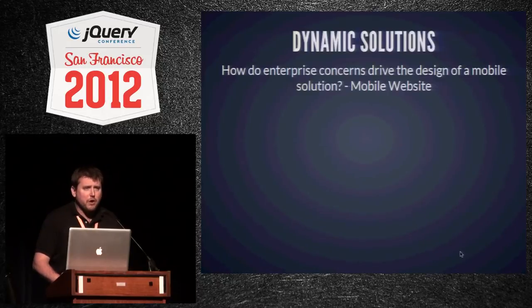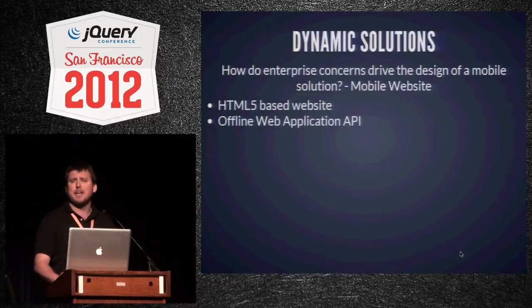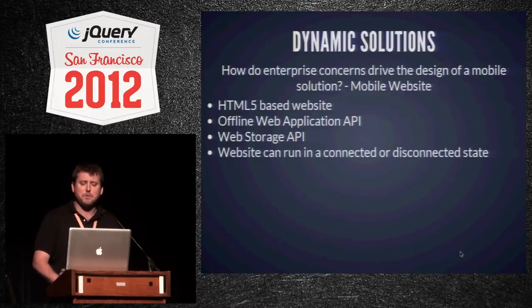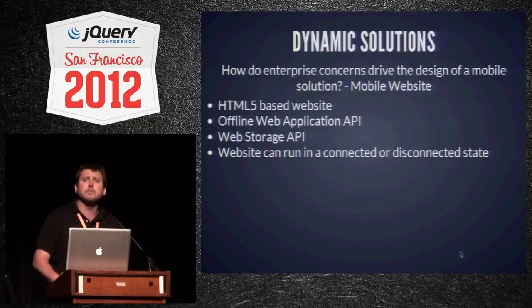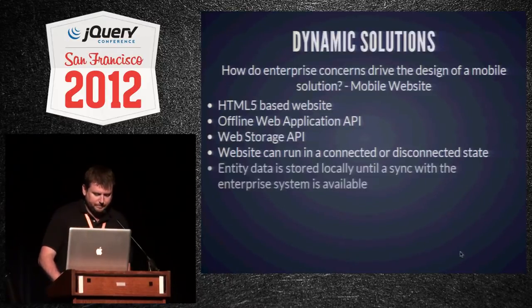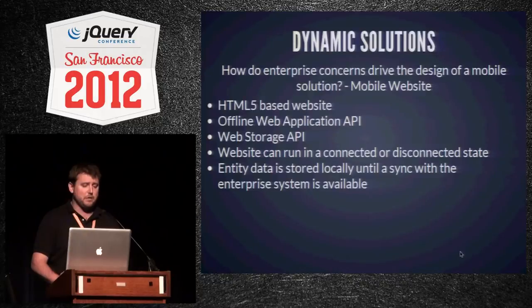The mobile website is an HTML5-based site. We make use of the offline web application API and the web storage API, and using both of those we can create a website that runs in a connected or disconnected state. This is very important when inspectors go into buildings where they won't have a connection — inspections still need to be completed. Entity data collected will be stored locally and then synced with the enterprise system as soon as a connection is available.